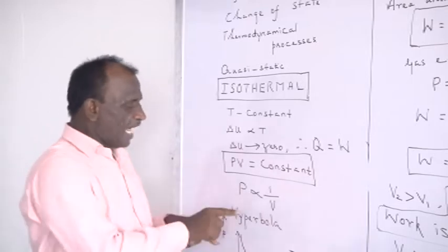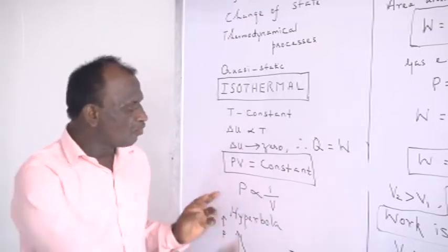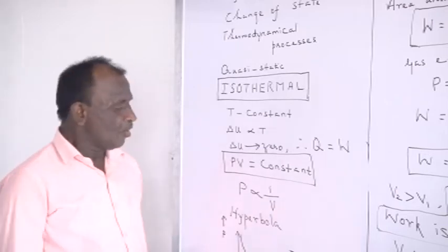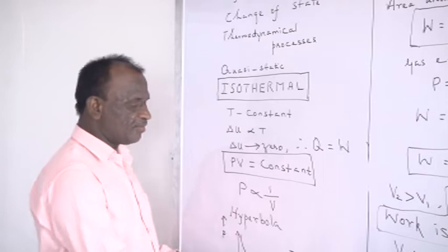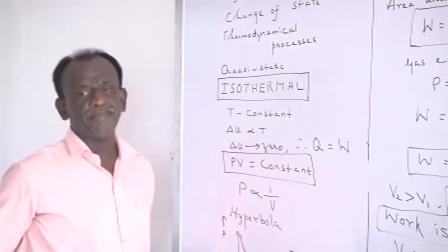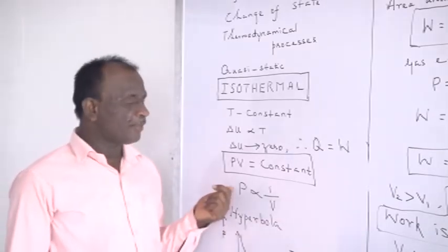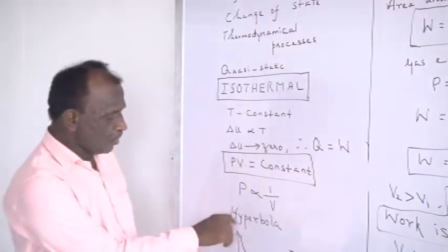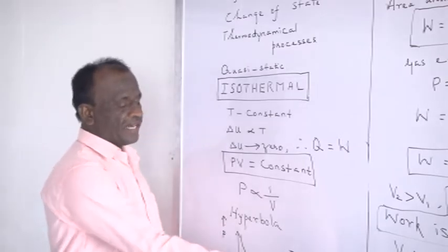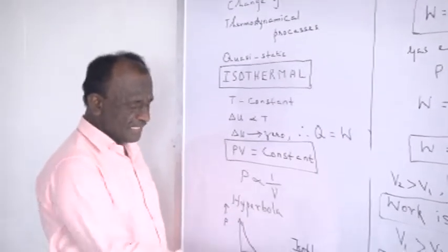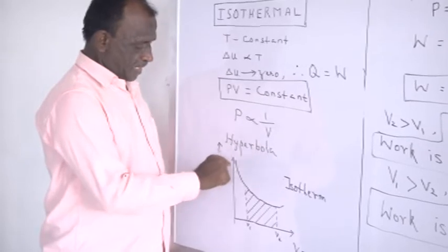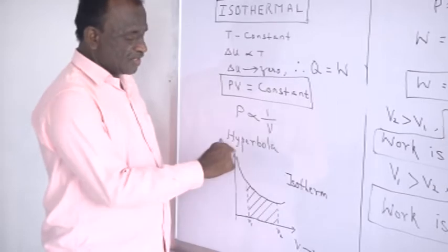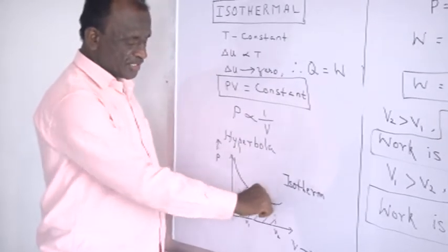So, P is inversely proportional to V. Once two quantities are inversely proportional to each other, the curve drawn between them is naturally called a hyperbola. Therefore, the variation of pressure with volume in an isothermal process is a hyperbola. Let me draw an isotherm — that is, the graph representing pressure and volume, as shown here. The isothermal process is represented this way.